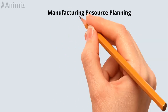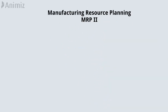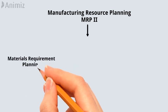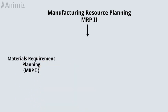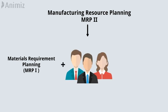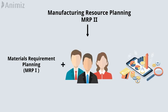Manufacturing Resource Planning or MRP2 evolved from early materials requirement planning or MRP systems by including the integration of additional data, such as employee and financial needs.